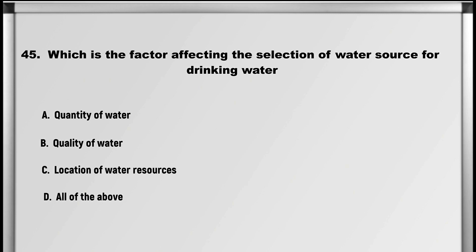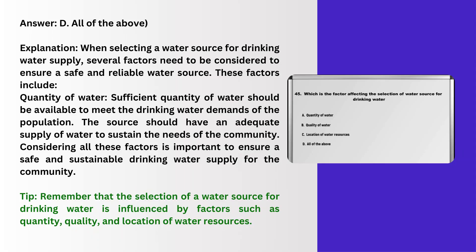Next up is question number 45: Which is the factor affecting the selection of a water source for drinking water? A. Quantity of water, B. Quality of water, C. Location of water resources, D. All of the above. Answer: D. All of the above.